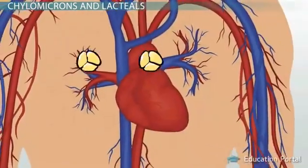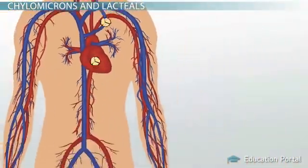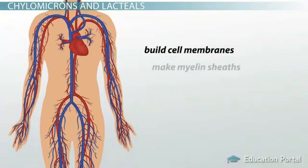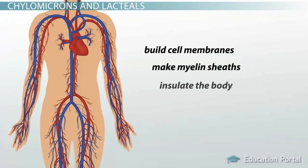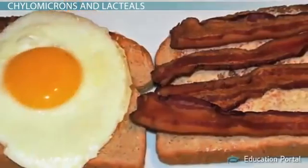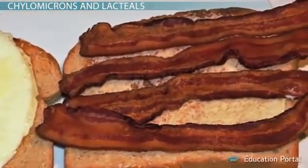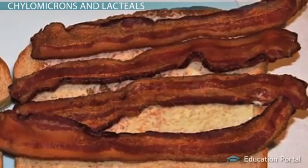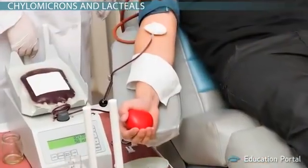Fats can now travel around your body. They are used to build cell membranes, make the myelin sheaths that coat your nerves, and insulate the body with a fatty cushion. Fats can also be used as fuel for your body if there are not enough carbohydrates in your system. Although you need fats for these important body functions, you can have too much of a good thing — for example, a high level of triglycerides in your blood can increase your risk of heart disease.